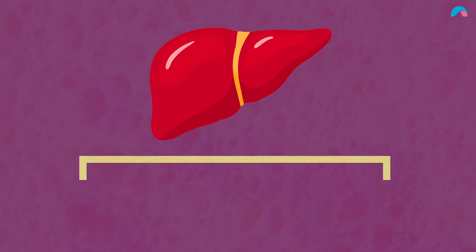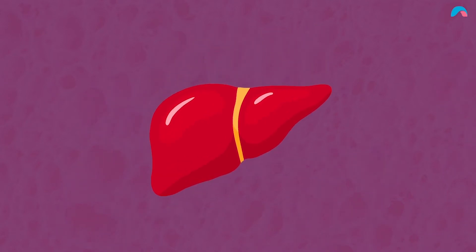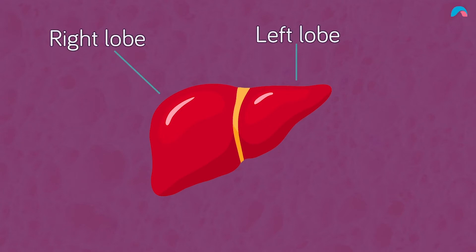Based on external appearances, the liver has a right and left lobe. This separation, however, does not correlate with the blood supply or biliary drainage.